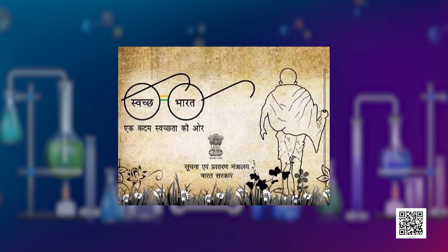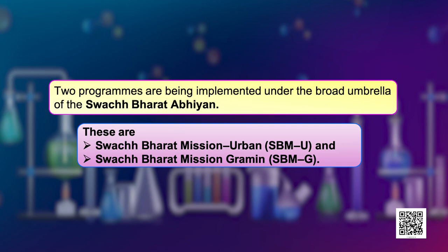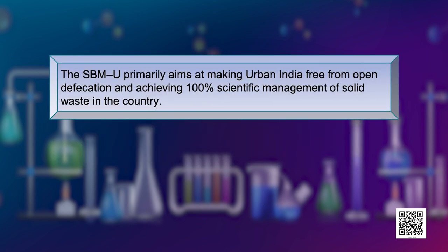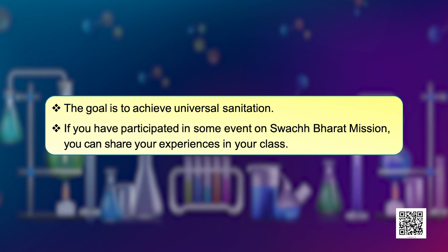You must be aware of the Swachh Bharat Abhiyan or Clean India Mission launched by the Government of India. Two programs are being implemented under the broad umbrella of the Swachh Bharat Abhiyan: Swachh Bharat Mission Urban, that is SBMU, and Swachh Bharat Mission Grameen, that is SBMG. The SBMU primarily aims at making urban India free from open defecation and achieving 100% scientific management of solid waste in the country. The SBMG targets to bring about an improvement in the general quality of life in rural areas by promoting cleanliness and hygiene and eliminating open defecation. The goal is to achieve universal sanitization.